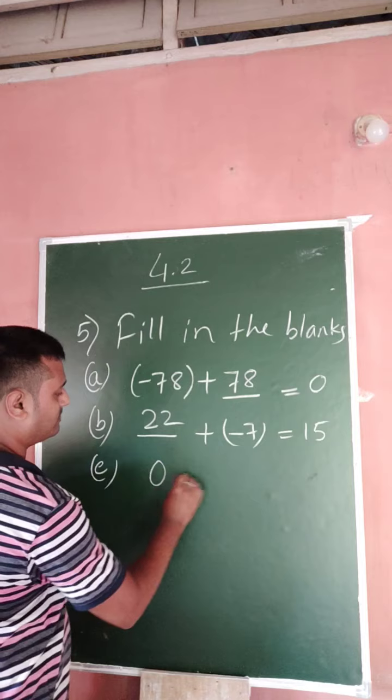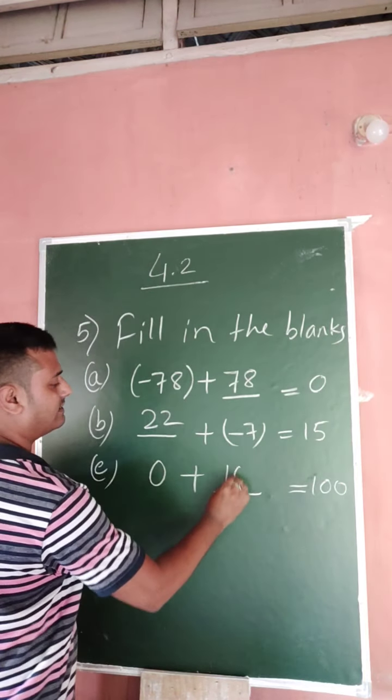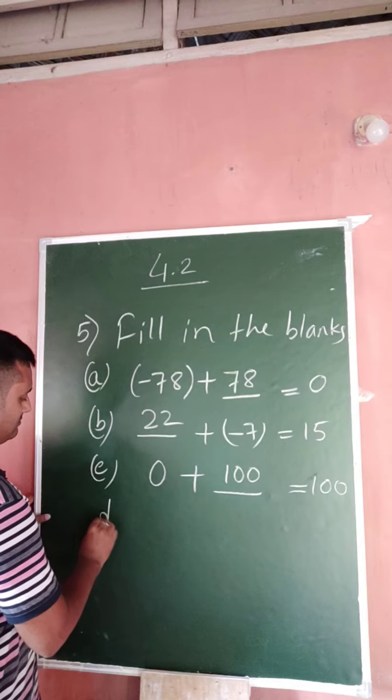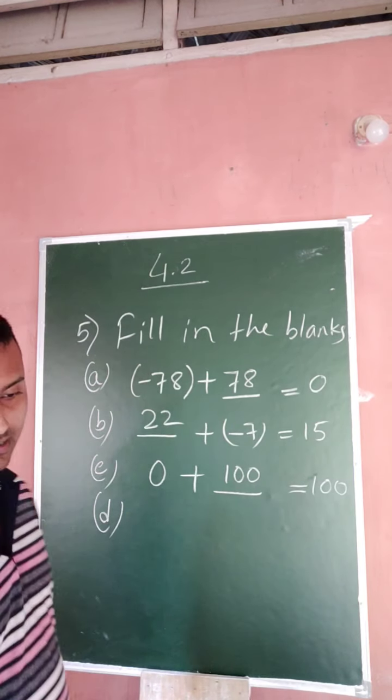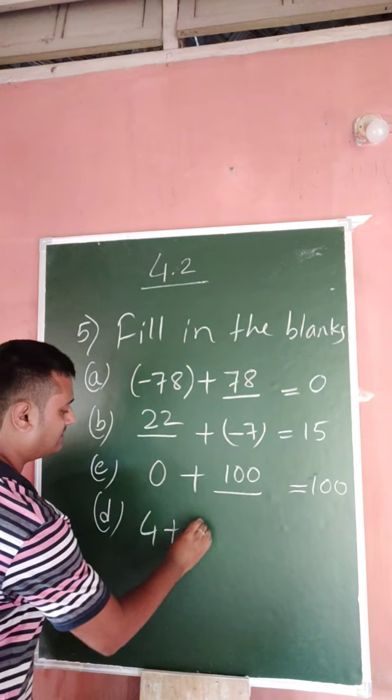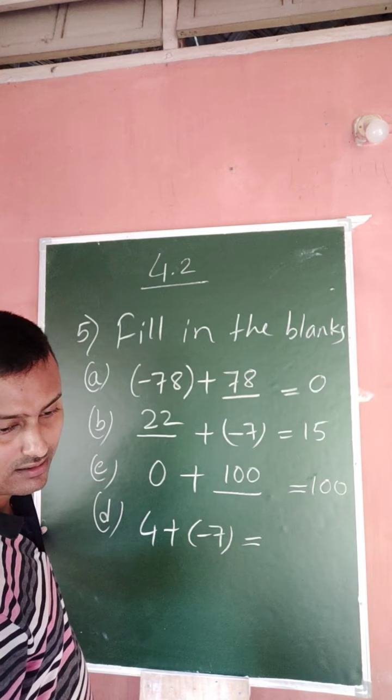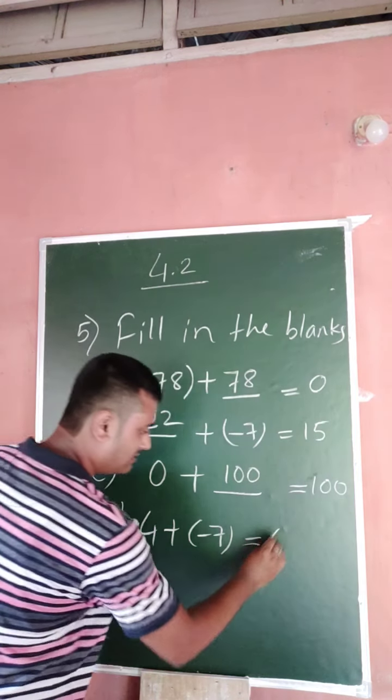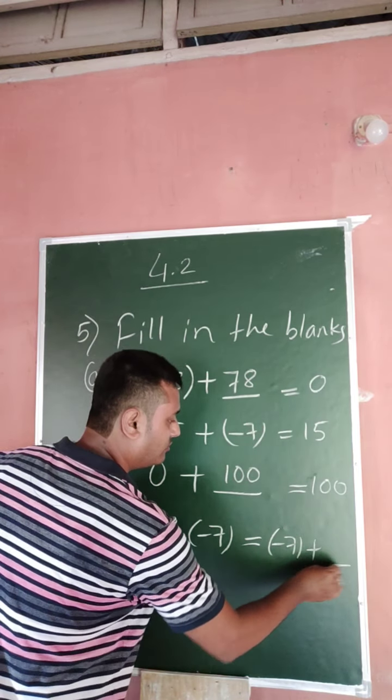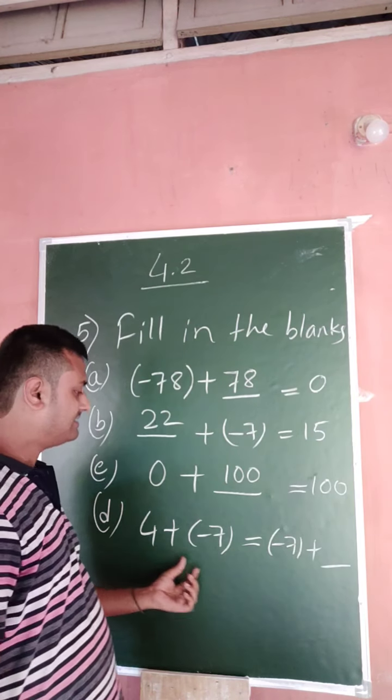Now this is going to see: 0 plus equals 100, 0 plus 4 plus minus 7 equals minus 7. Plus which property? A plus B equals B plus A. That means commutative property.